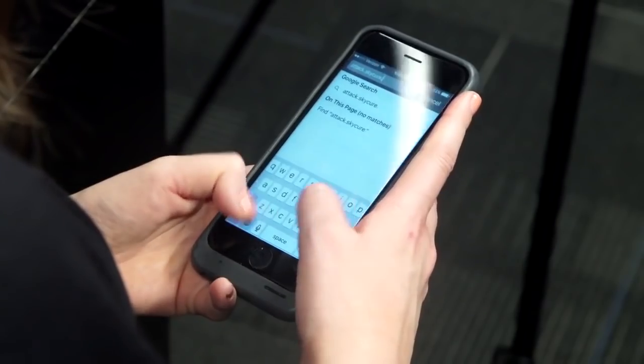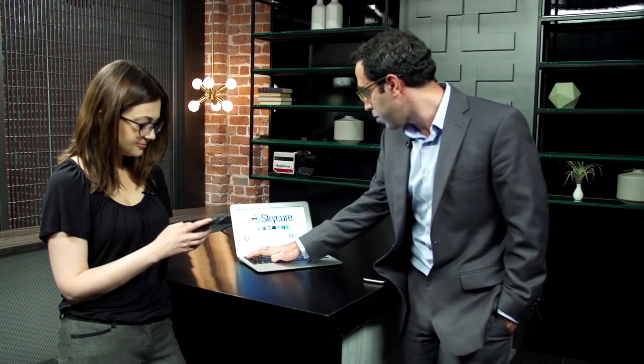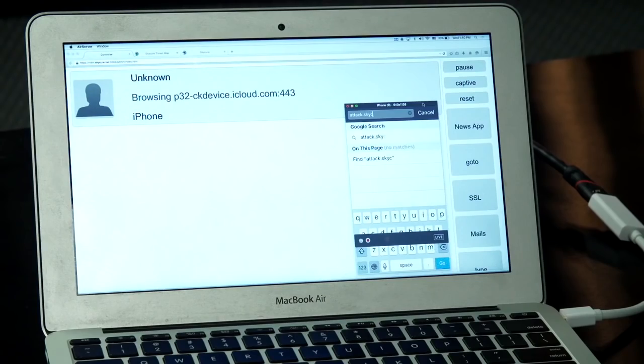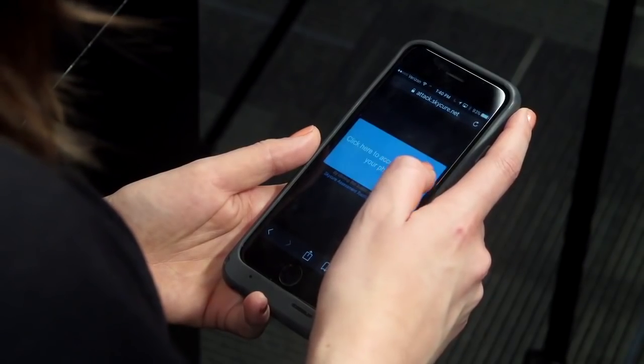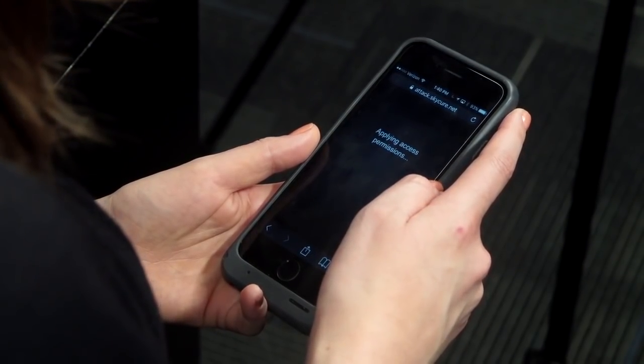So if you would browse to attack.skycure.net, I will show your screen over here. You will see this free HBO streaming HD movies or something like that where you're allowed to install that so-called malicious profile. Click on this blue button and follow the installation instructions.